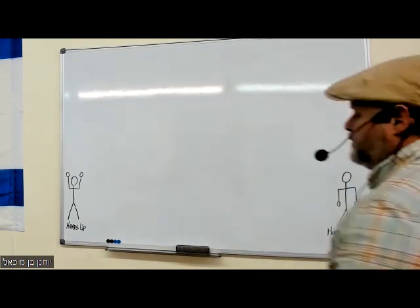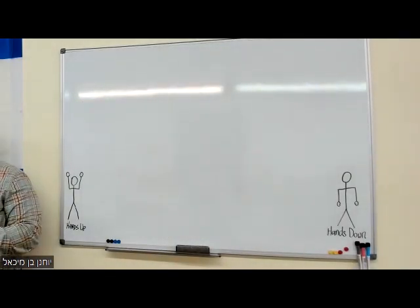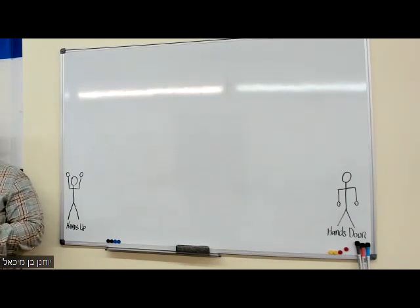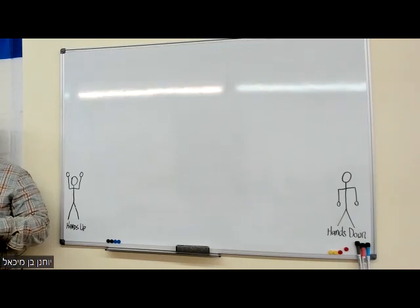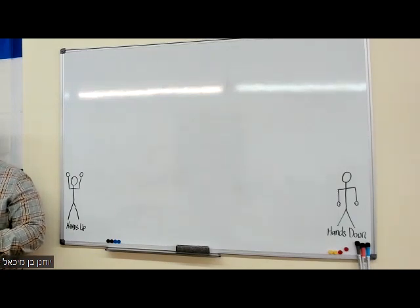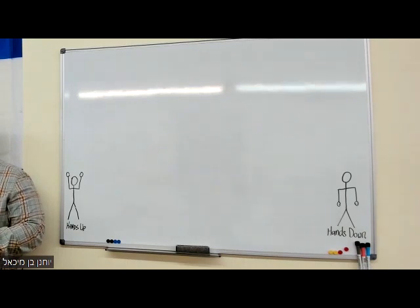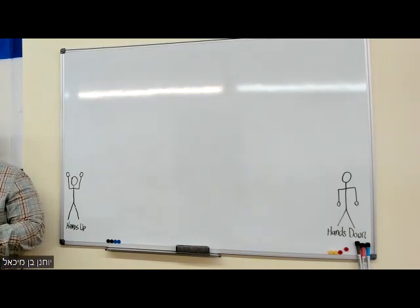Last week we talked about the bagadkefat letters — those six letters that change their sound when they have a dot inside of them. We talked about a-type vowels: kamats, patah, and chateph patah. We even talked about an o-type vowel, the kamats khatuf, which makes an o sound. Today we're going to talk about e-type vowels.